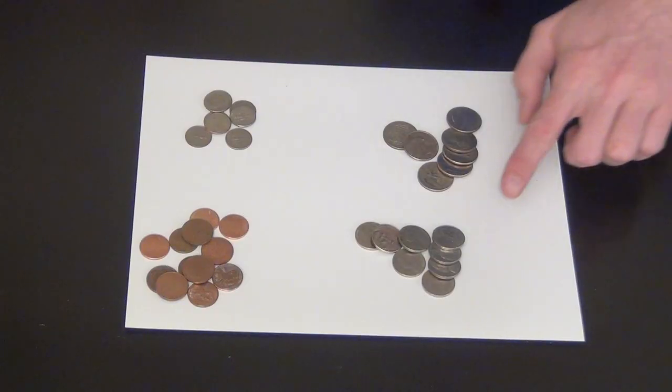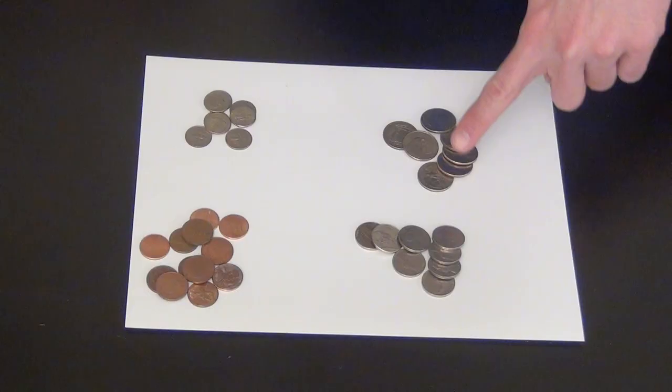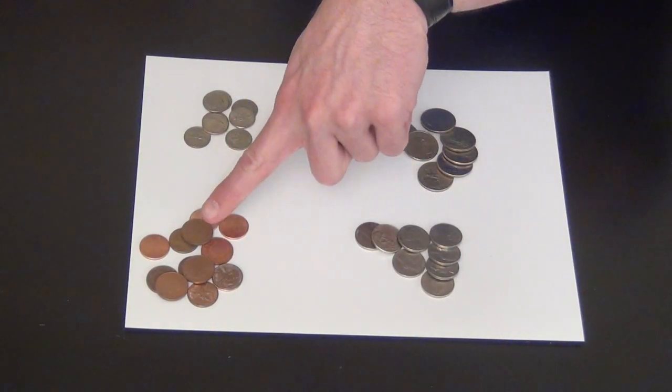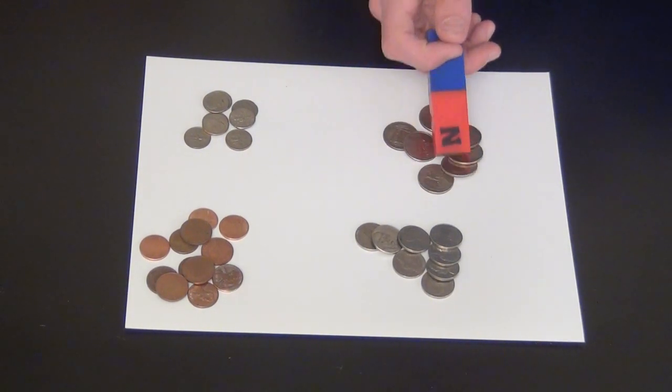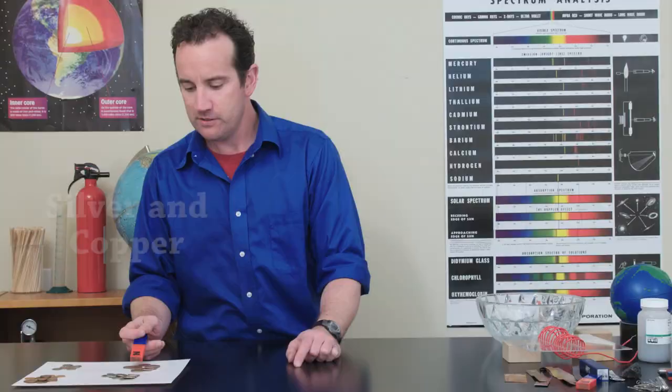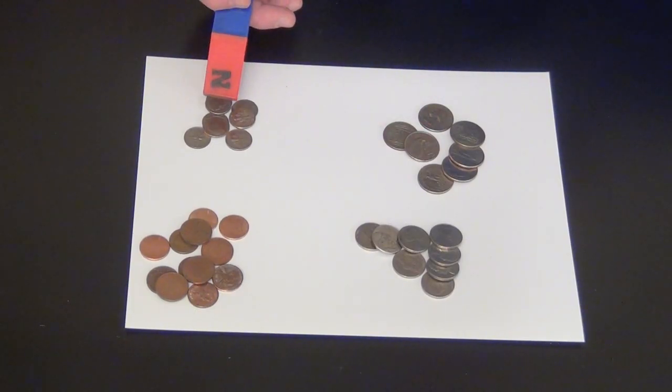Okay, here I have several different types of change. I have quarters, nickels, dimes, and pennies. Let's start with the quarters. There is no effect. Quarters are made of silver and copper. And what about the dimes? Same story, no effect.